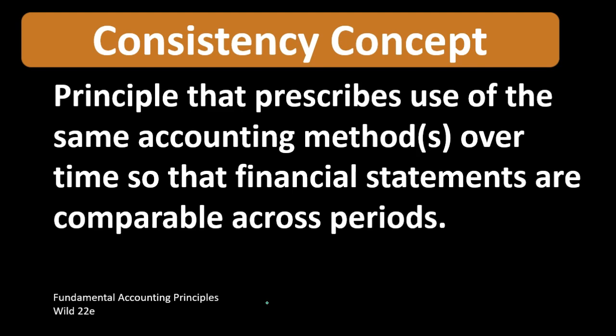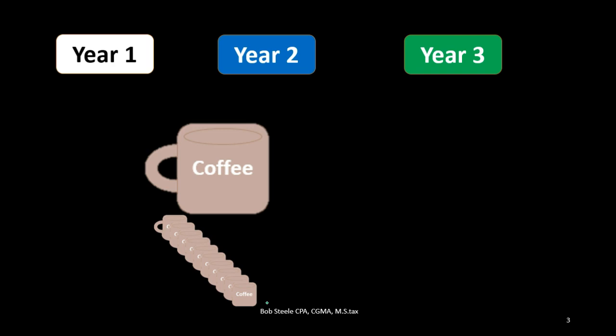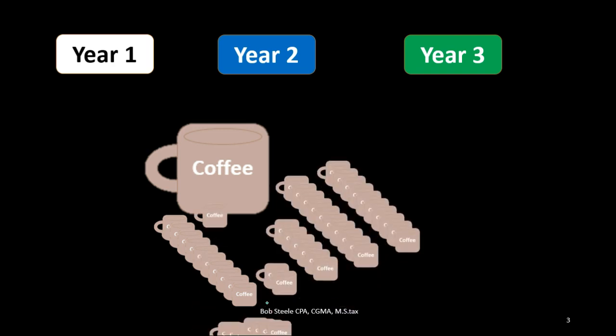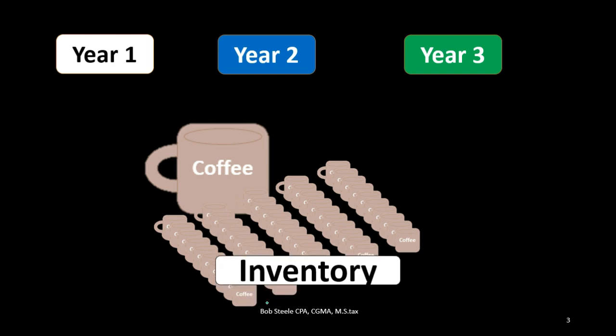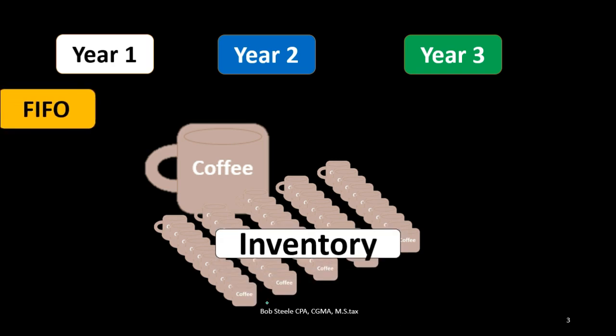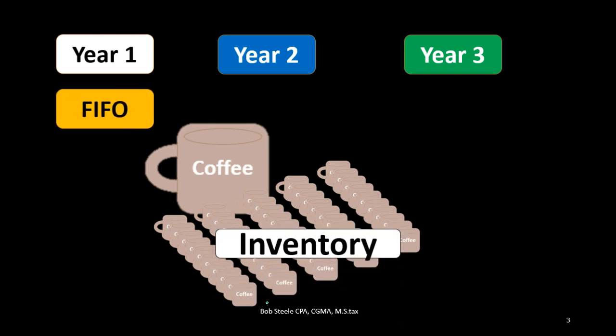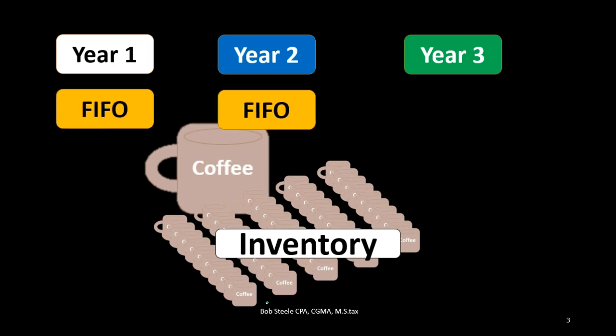Because those are assumptions, they do have an effect on the financial statements. Therefore we want to make sure that we are consistent — meaning that if we used a first in first out inventory flow assumption in year one, ideally we would want the same assumption in year two, year three, and so forth.